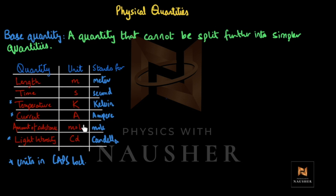So: mole — M is small; candela — cd; Kelvin — K capital; meter — m small; second — s small. The units for those three emphasized quantities — Kelvin, ampere, candela — are in caps lock, meaning they start with a capital letter.